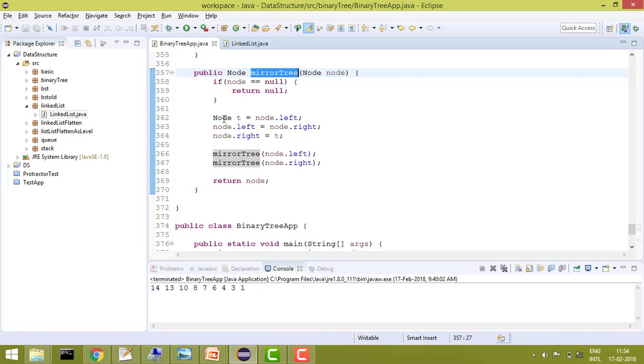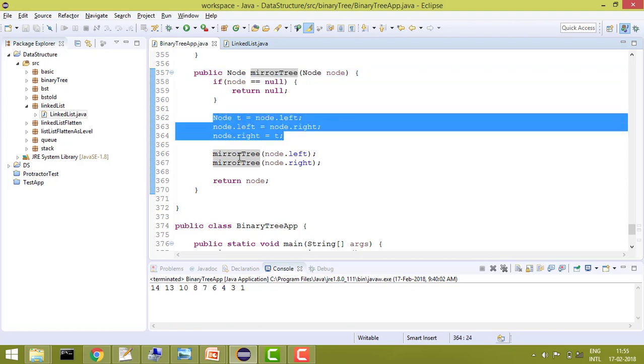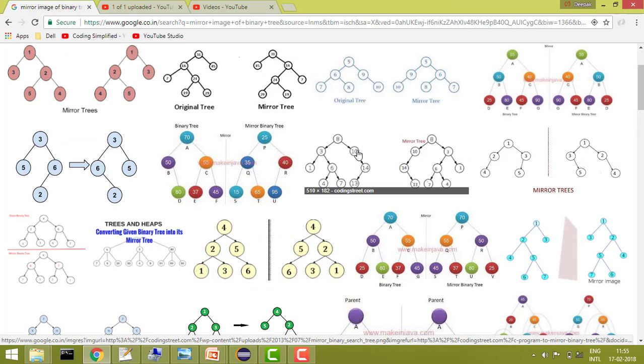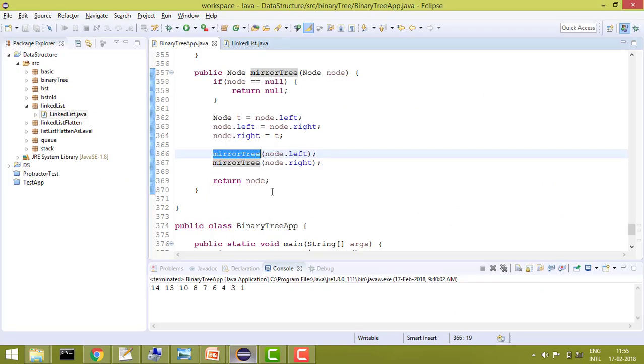And then once we do this, after that we are recursively calling mirrorTree(node.left). So once we have completed this one, then recursively we are doing for the other nodes as well. That is why we are doing for node.left and then we are doing for node.right. And at every position, at every iteration, we are changing the position of the right and left node. And at the last we will return the node.